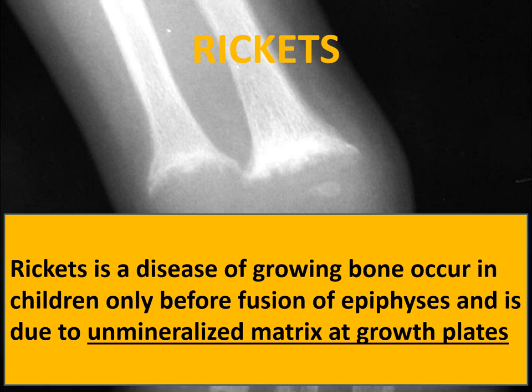There are various causes of rickets in children. The most common is vitamin D deficiency. Others are calcium or phosphorus deficiency, or rarely seen in patients of chronic kidney disease, renal tubular acidosis, and in fluorosis.